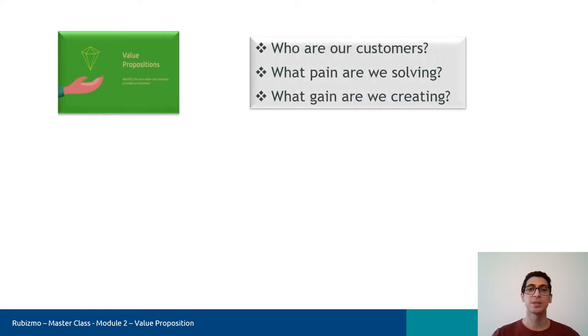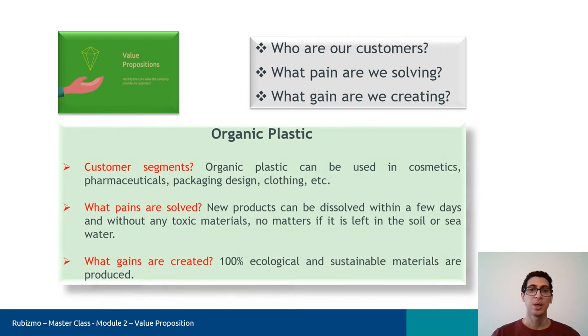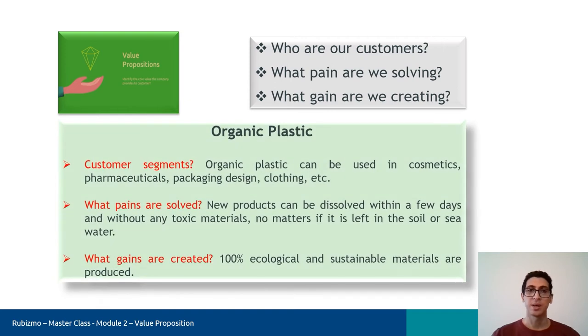Let's see who are the customers, how pain is solved, and how gain is created. Organic plastic can be used in cosmetics, pharmaceuticals, packaging design, clothing, and soap. What pains are solved? New products can be dissolved within a few days and without any toxic materials, no matter if it is left in the soil or sea. And what gains are created? 100% ecological and sustainable materials are produced.